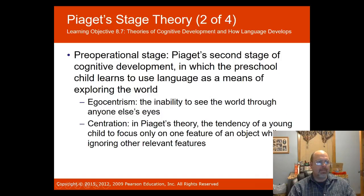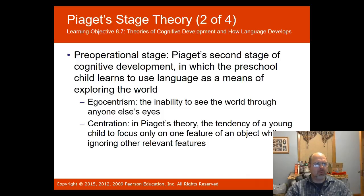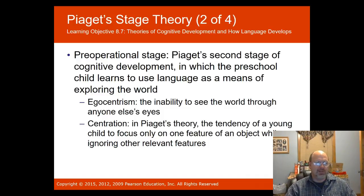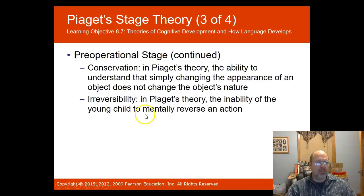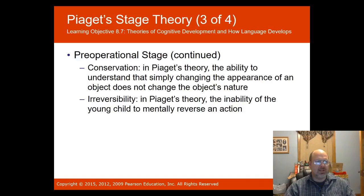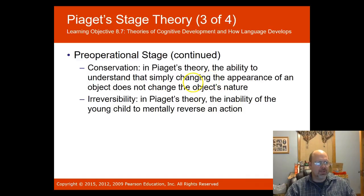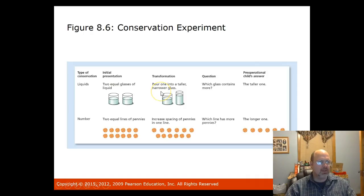Object permanence is the knowledge that an object exists even when it is not in sight — infants in the sensorimotor stage do not yet have this. The pre-operational stage is where the preschool child learns to use language as a means of exploring the world. There is a lot of egocentrism — the child's inability to see the world through anyone else's eyes. Centration is the tendency of the young child to focus on only one feature of an object while ignoring other relevant features. Conservation is the ability to understand that simply changing the appearance of an object does not change its nature.